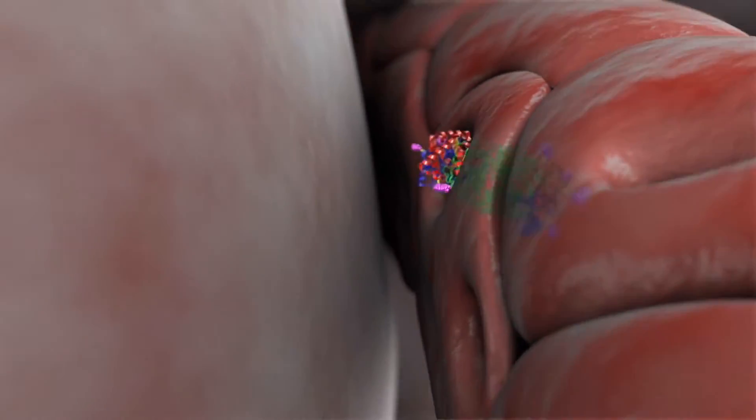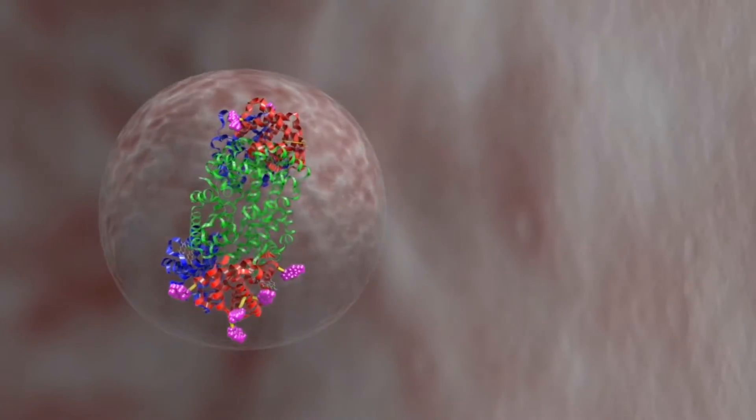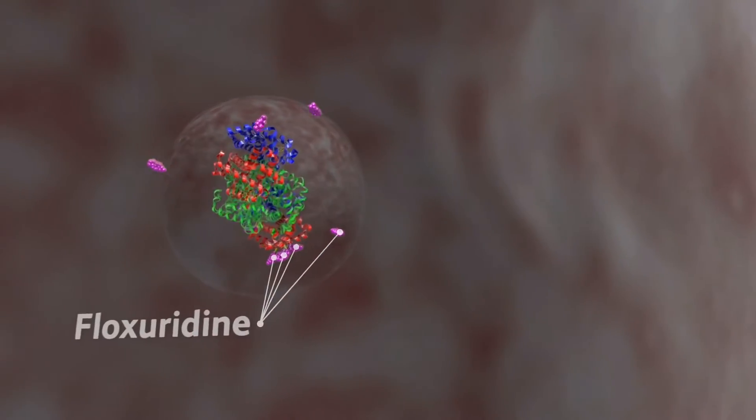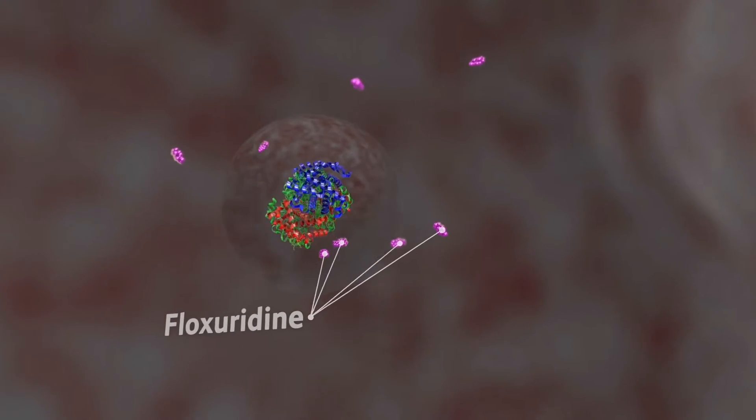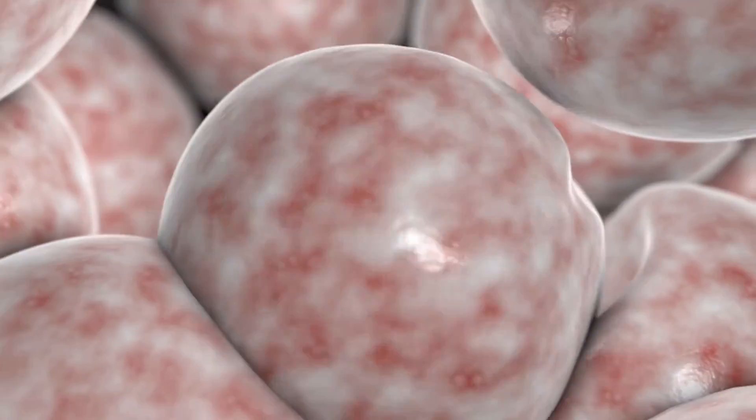Once TBI-302 is taken up by tumor cells, metabolic processes within the cell release the active anti-cancer drug Floxuridine from the hemoglobin. Now that Floxuridine is localized to the liver, it can effectively treat liver tumors due to its known selectivity and activity against cancer cells.